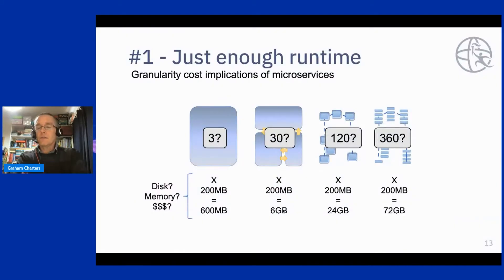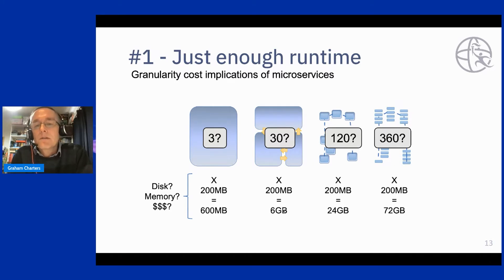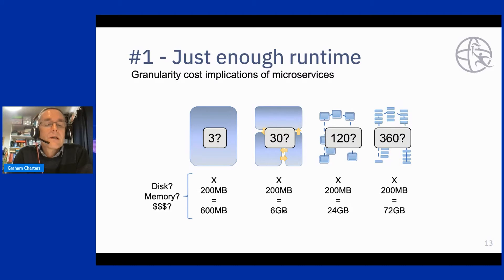So let's drill down on each of those a little bit more. Reason one: just enough runtime. If you think about the different architecture styles — monolithic applications, macro services, micro services, and functions — as you break an application up into more and more fine-grained deployment units, each one pulls along its own copy of the runtime. There's a cost associated with that, which is a very real cloud cost if you're deploying into the cloud, or a real on-prem infrastructure cost if you're not.